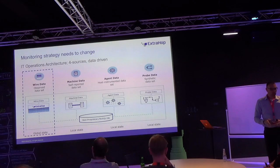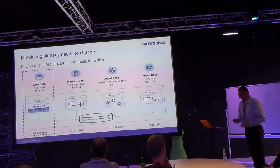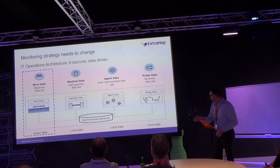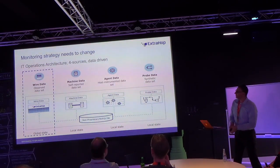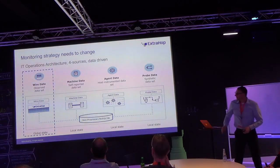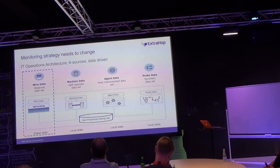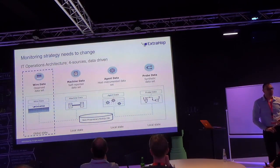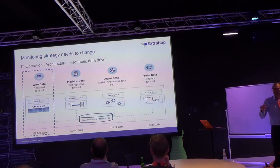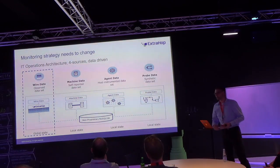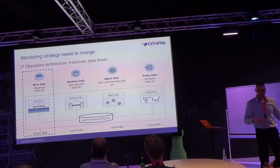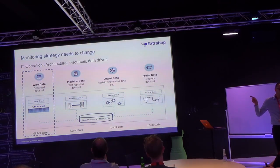Wire data refers to the transactions going over your infrastructure. It's not necessarily wired — it could also be wireless — but we call it wire data. Wire data is the only one that observes global state. That's really a difference. Global state means that if a VM is brought up in your data center, whether it is in an application tier, database tier, or storage tier — somewhere in my network, we will spot it, because there is a new transaction being brought up.